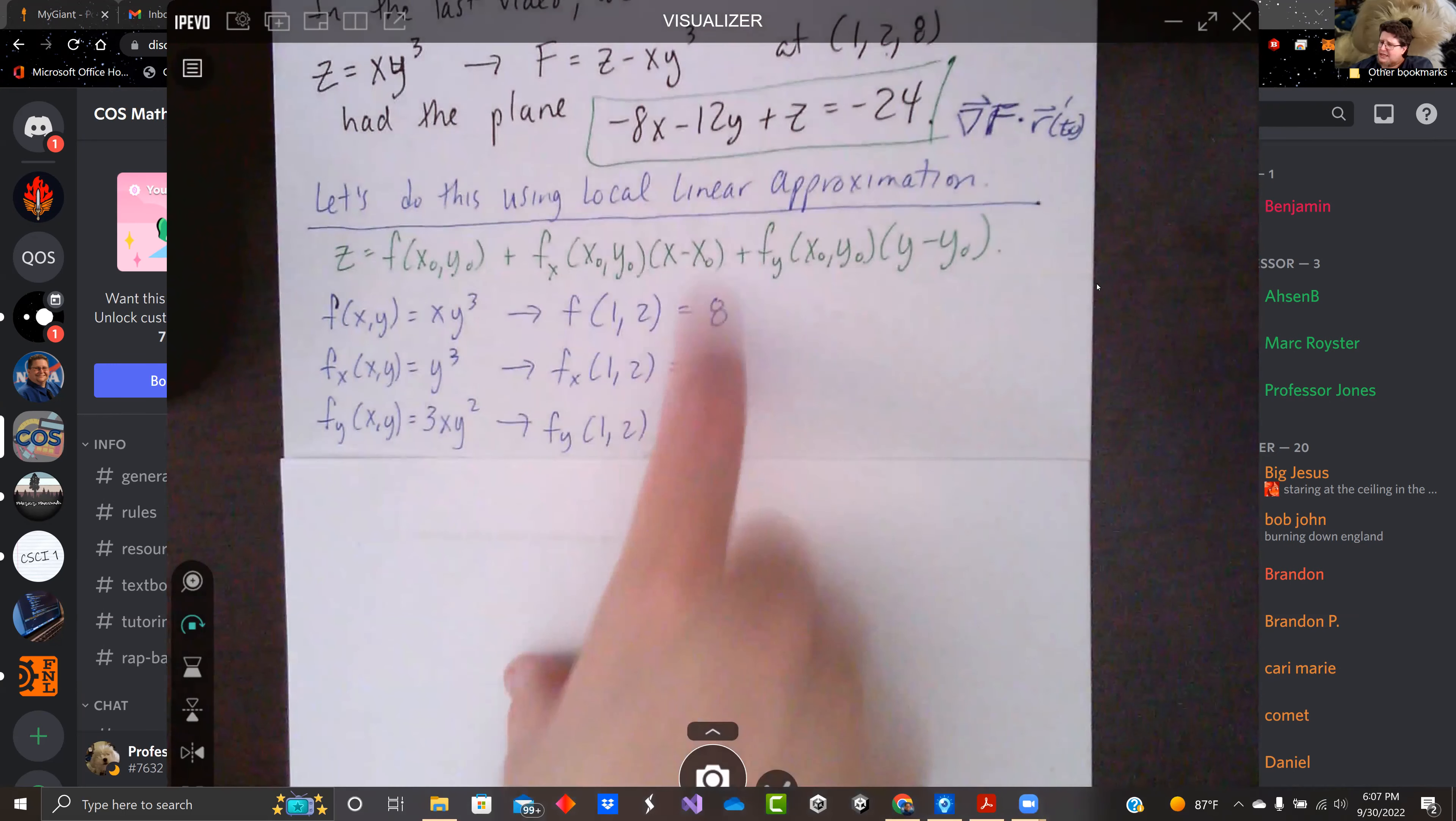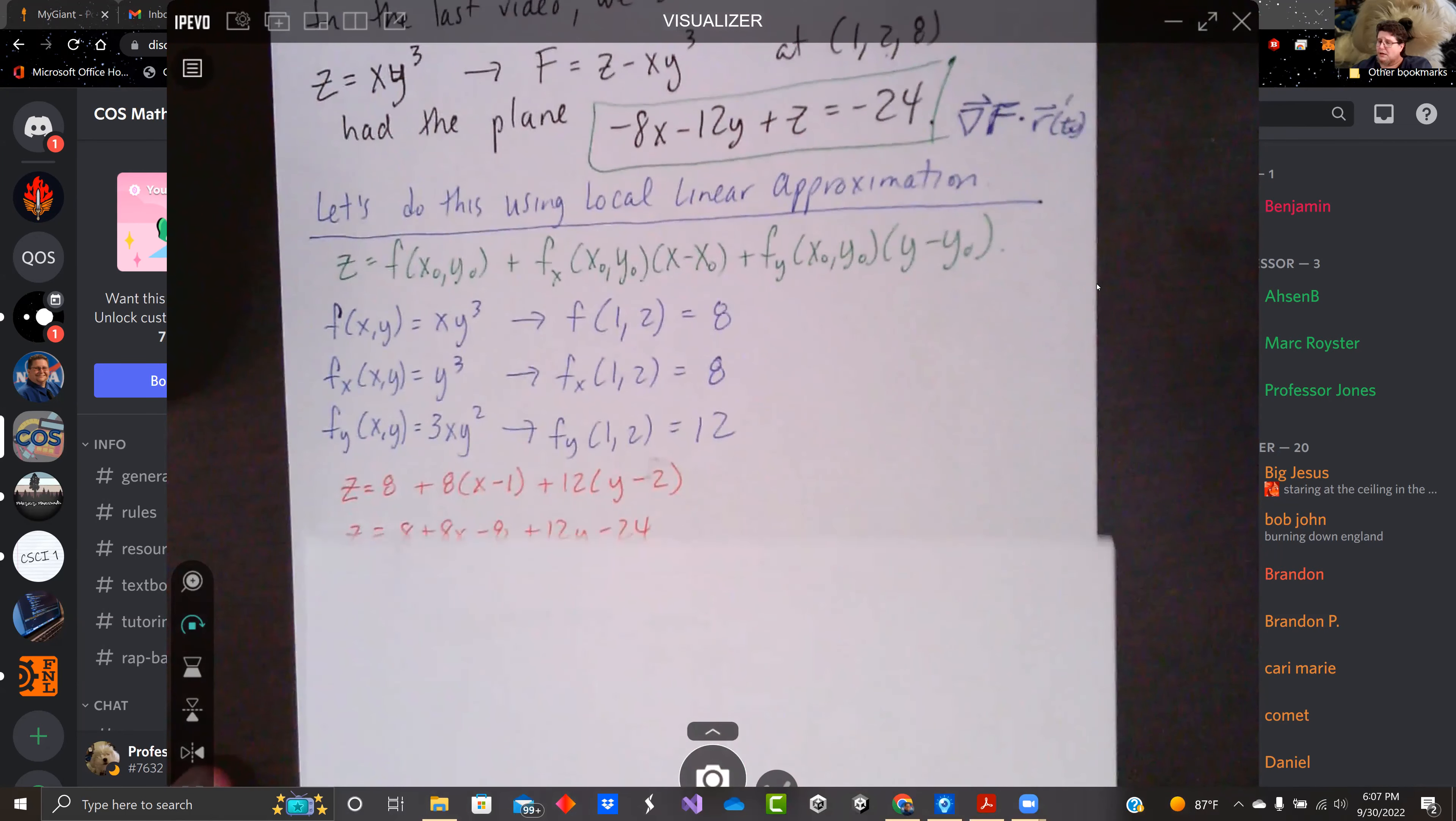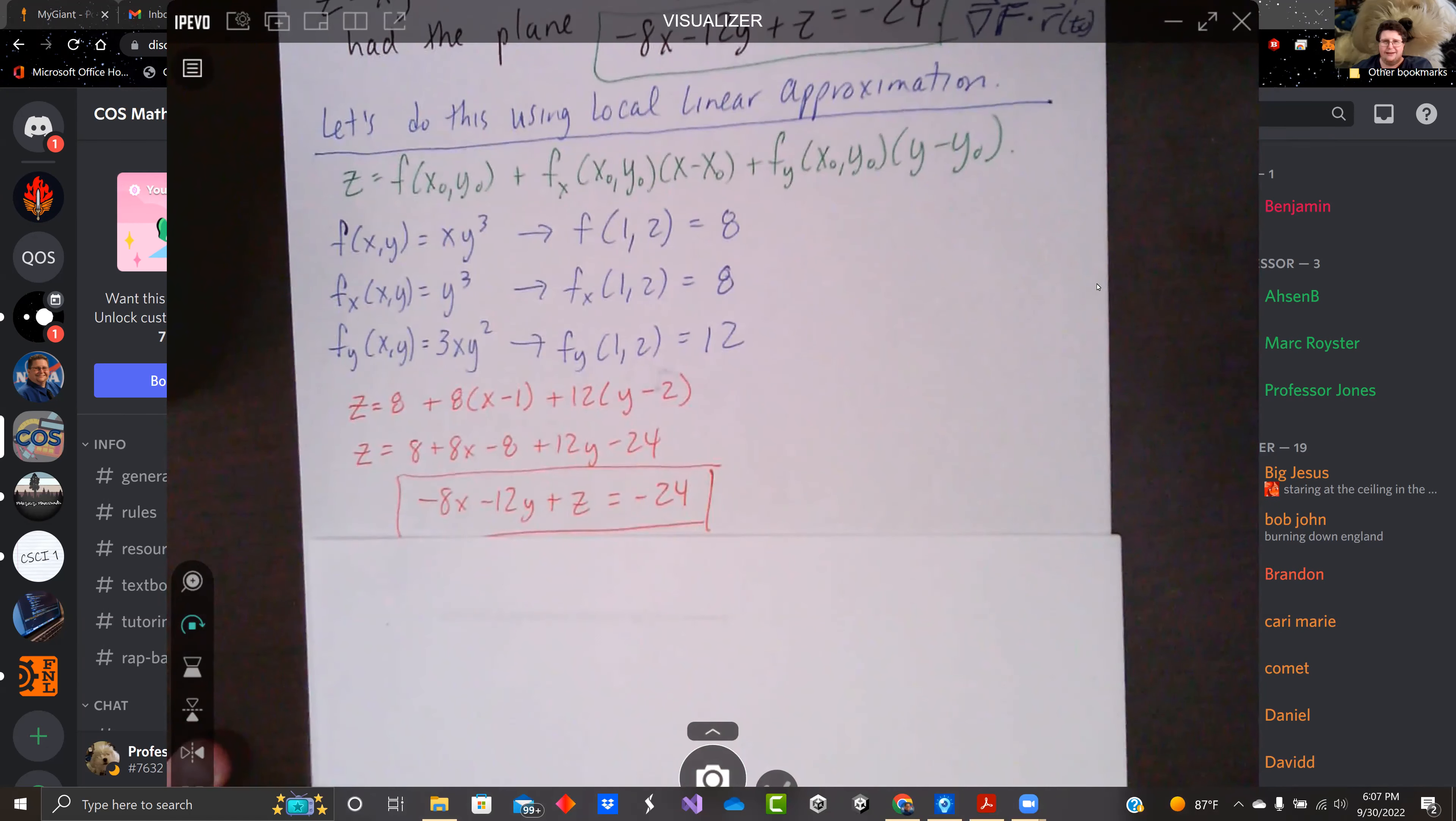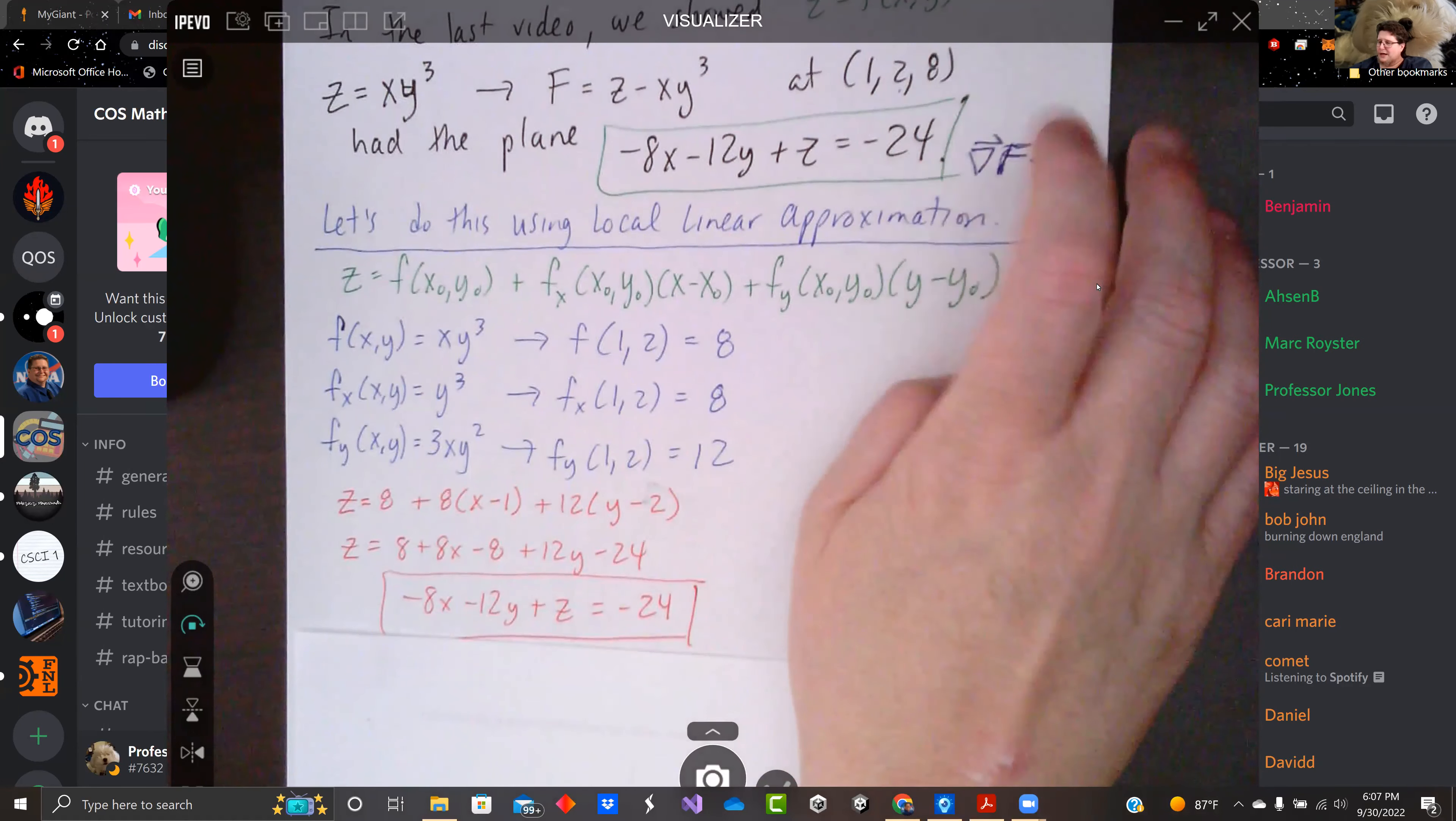And when we plug these all into this formula right here with (x - 1) and (y - 2), we get that cleans up to that. And when we move x and y to the other side, we get -8x - 12y + z = -24. The same thing we got with the gradient of f dotted with that.